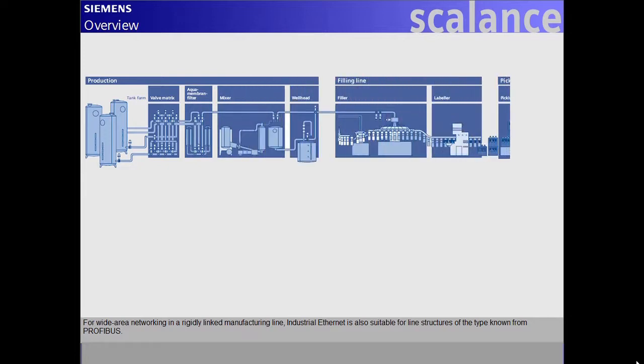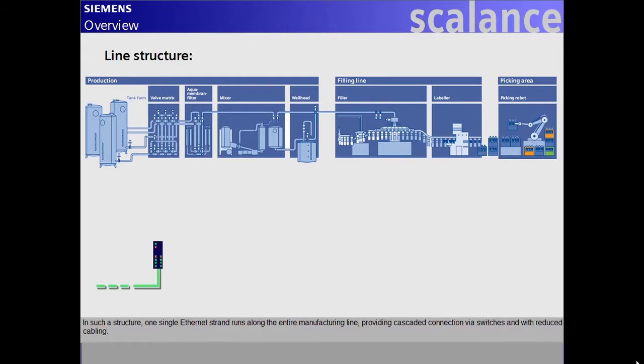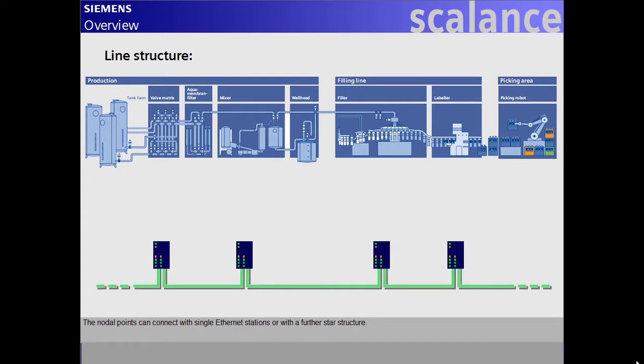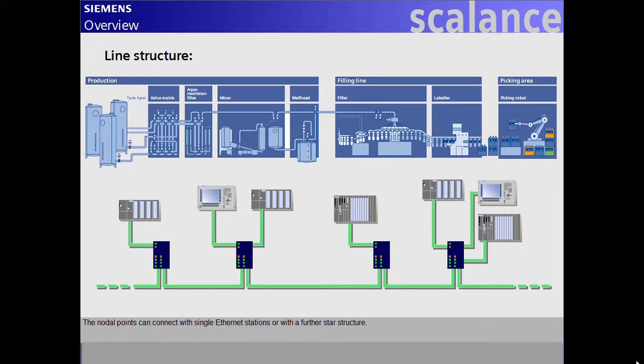industrial Ethernet is also suitable for line structures of the type known from PROFIBUS. In such a structure, one single Ethernet strand runs along the entire manufacturing line, providing cascaded connection via switches and with reduced cabling. The nodal points can connect with single Ethernet stations or with a further star structure.